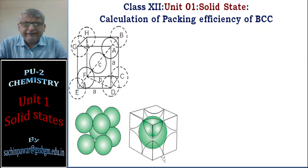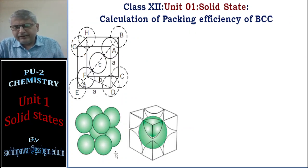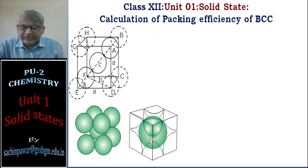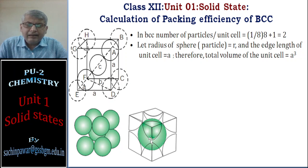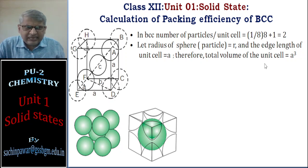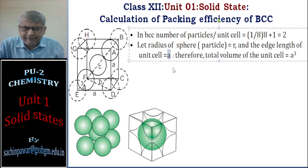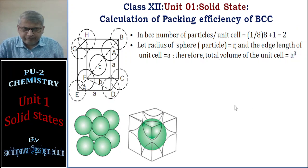Now, calculation of packing efficiency of body-centered cubic (BCC). BCC has eight particles at the corners and one particle at the center of the unit cell. The number of particles per unit cell = (1/8 × 8) + 1 = 2. Let the radius of the sphere be r and the edge length be a, so the volume of the unit cell is a³.